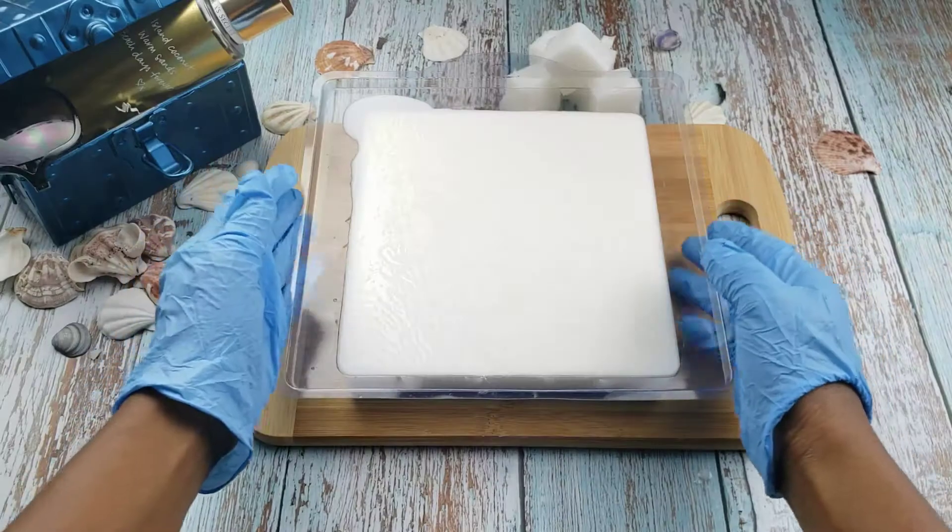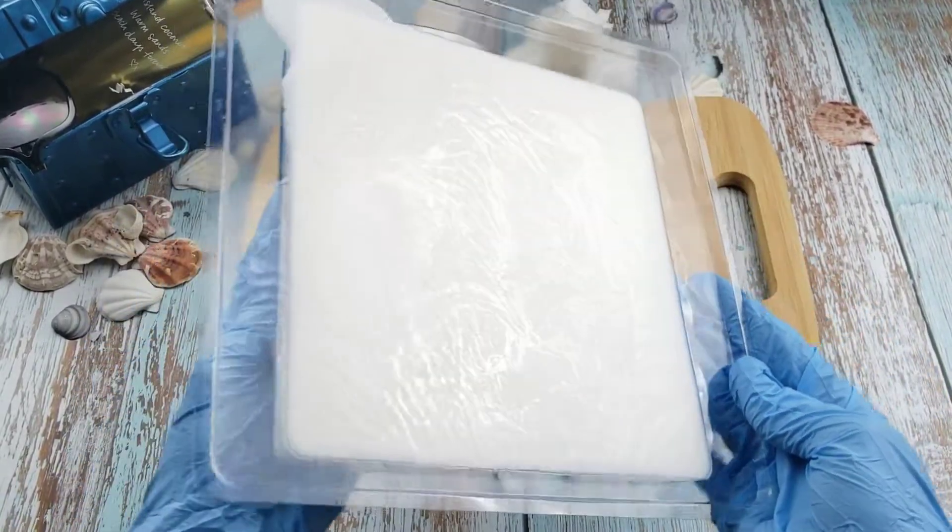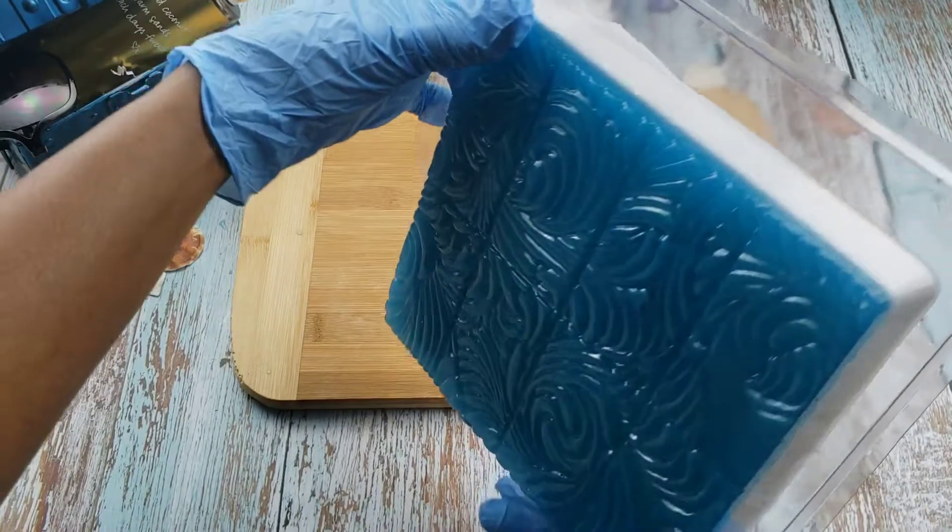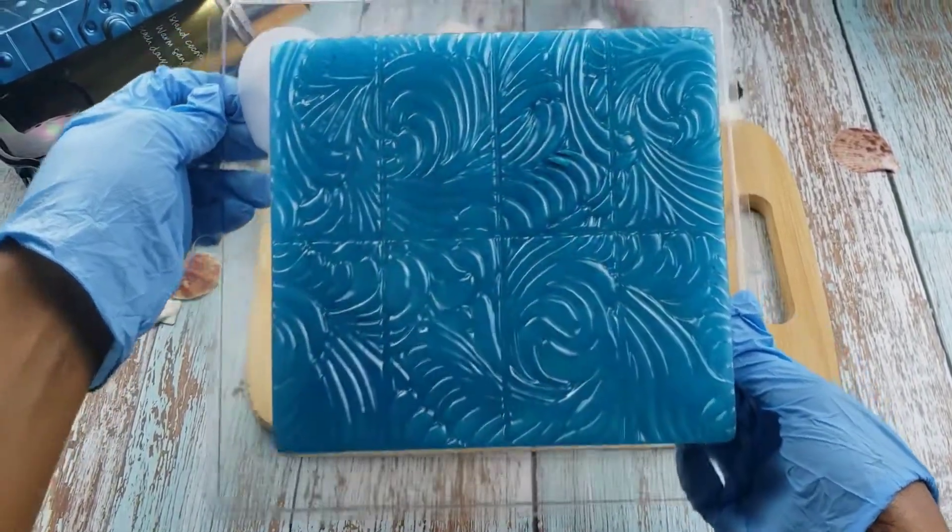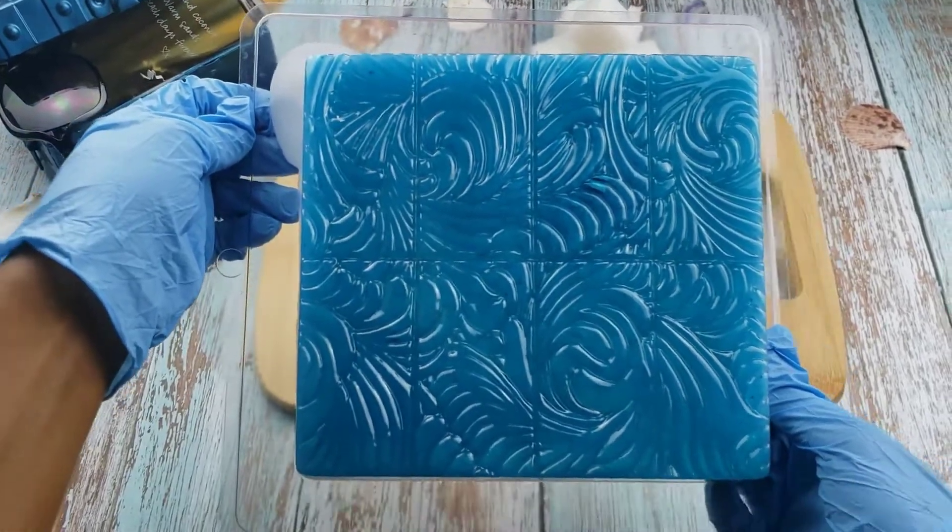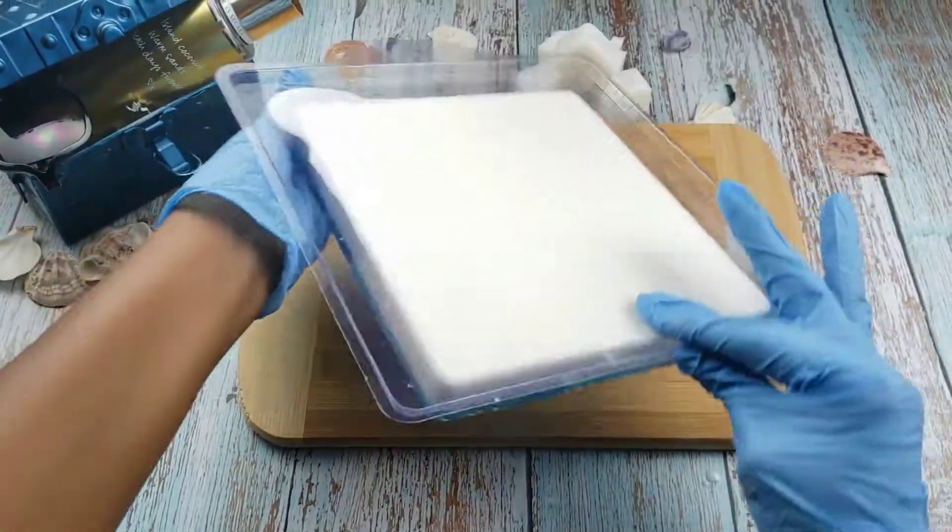After about four hours it's time to remove the soap from the mold. Now I find that I need to apply some elbow grease when removing soap from this kind of tray mold, but once the soap is out all the effort proved to be worth it.